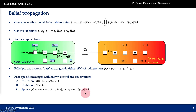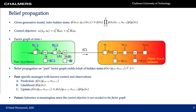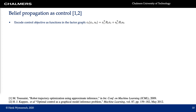For the future, even though we have the factor graph, it is meaningless to do belief propagation, because the control objective CT is not encoded anywhere in this factor graph. So there is no way to determine reasonable controls. The way this problem has been addressed in the literature is by encoding the control objective directly in the factor graph.